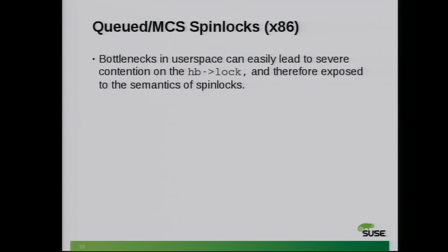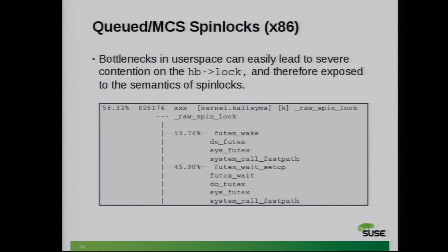I had mentioned the spin lock implementation and cache-line usage. The contention can be rather pathological in real workloads. Here's one example — spending 60% of the time waiting to acquire a spin lock. That can't be good. And if you have a lock implementation that is basically polling on that lock, it will do really, really bad things for the cache line.